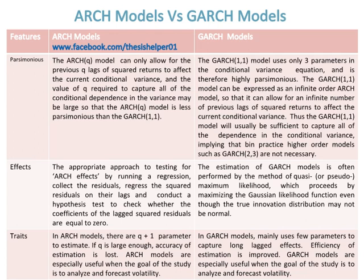The appropriate approach to testing for ARCH effects is by running a regression, collecting the residuals, regressing the squared residuals on their lags, and conducting a hypothesis test to check whether the coefficients of the lagged squared residuals are equal to zero. Whereas, the estimation of GARCH models is often performed by the method of quasi or pseudo-maximum likelihood, which proceeds by maximizing the Gaussian likelihood function even though the true innovation distribution may not be normal.